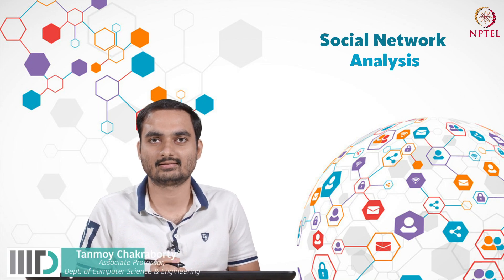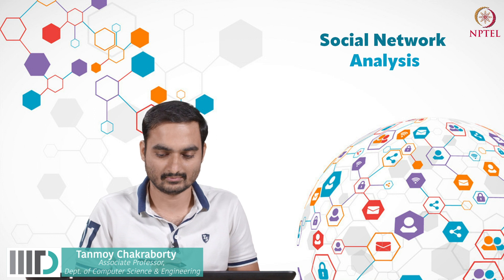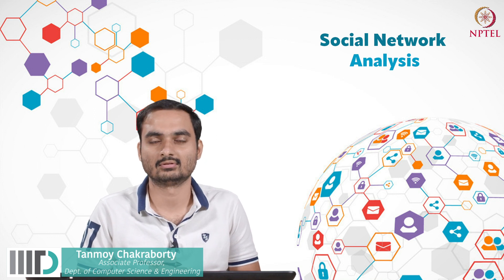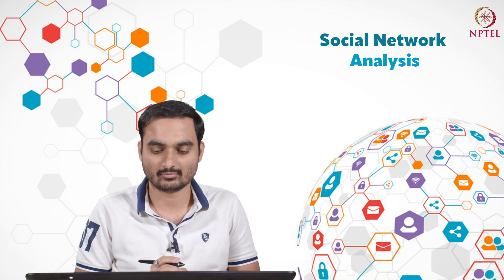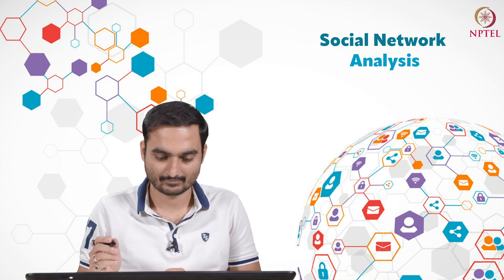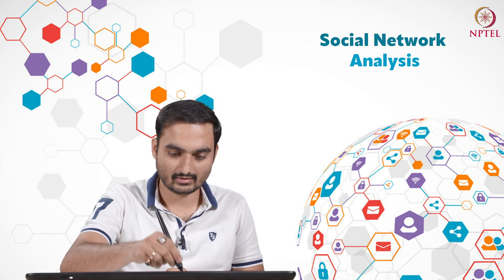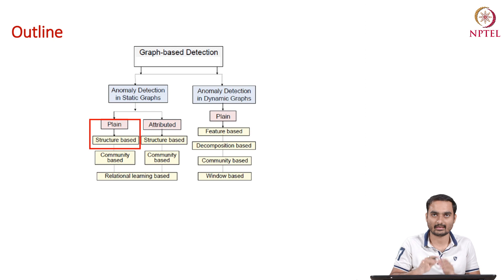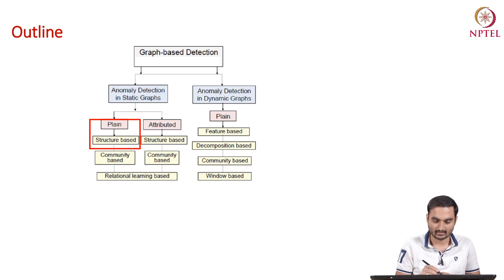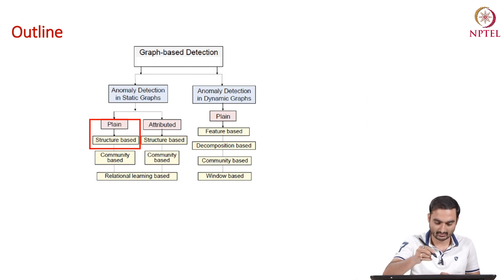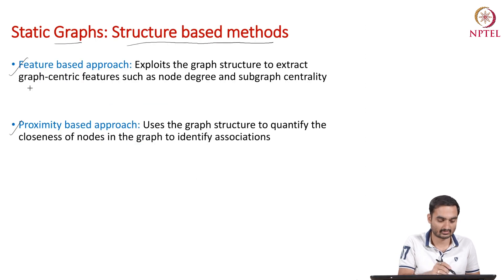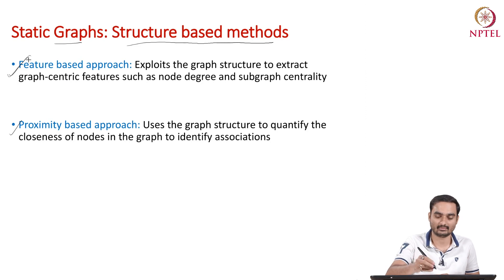In the last lecture, we started discussing algorithms for detecting anomalous entities from a graph. We looked at a taxonomy and discussed an algorithm where we use a plain graph and different structural properties — mostly a feature-based approach — to detect anomalous entities.